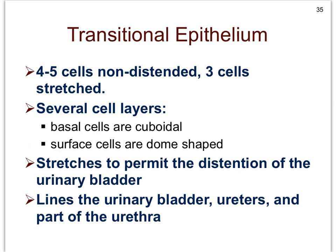That brings us to our last tissue, which is our second oddball. It is actually an oddball because it doesn't follow the nomenclature of getting a name with either simple or stratified, or a shape name like squamous, columnar, or cuboidal. It has its own unique name, and that is transitional. Just like pseudostratified ciliated columnar epithelial tissue was our first oddball, placed in the simple epithelial tissues because all columnar cells touch the basement membrane, transitional epithelial tissue is made up of multiple layers of cells — so by our classification system, it is really a stratified tissue.